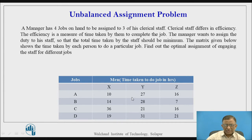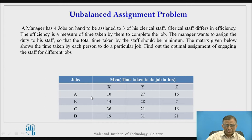This is the assignment effectiveness matrix in which the clerical staff are designated as X, Y, and Z — three clerical staff with four jobs. The values represent the time taken by a particular person to perform a particular job. For example, if clerk X is assigned job E, he requires 10 hours; if Y is given the same job, he may take 27 hours. The number of staff available is three whereas the jobs are four, which is why it is an unbalanced assignment problem.